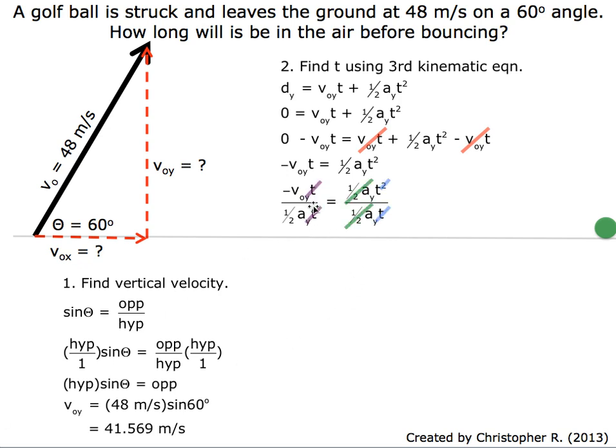These two t's cancel each other out. This t cancels with one of these t's, we're left with t. The ½a cancels out on the right side. So we're left with t equals -v_y divided by ½a.